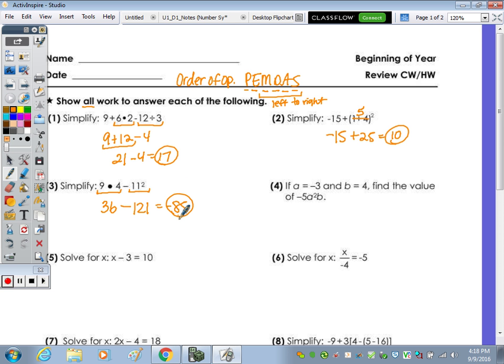Number four says if a is equal to 3 and b is equal to 4, find the value. So we are evaluating this algebraic expression. We substitute the a with -3 and then the b with 4 into our order of operations. So this becomes a positive 9, so it's really -5 times 9 times 4. You can do it in any order as multiplication is commutative, and you get -180.